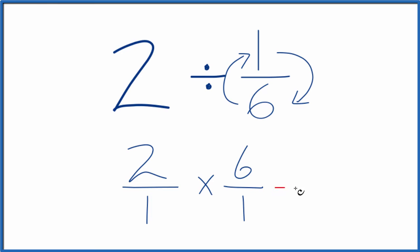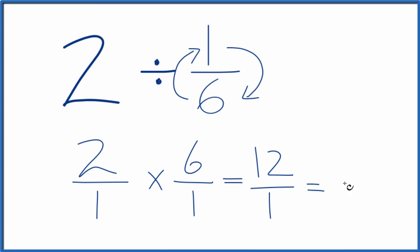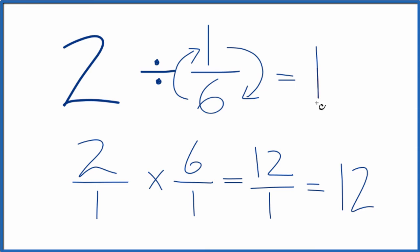2 times 6 — that equals 12. 1 times 1 — that equals 1. And 12 over 1, that's just 12. So when we divide the fraction 2 by 1/6, we get 12.